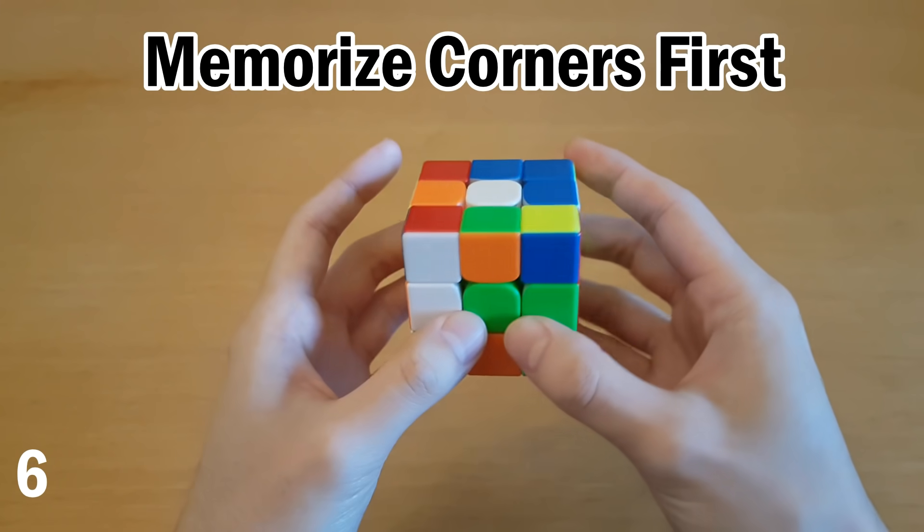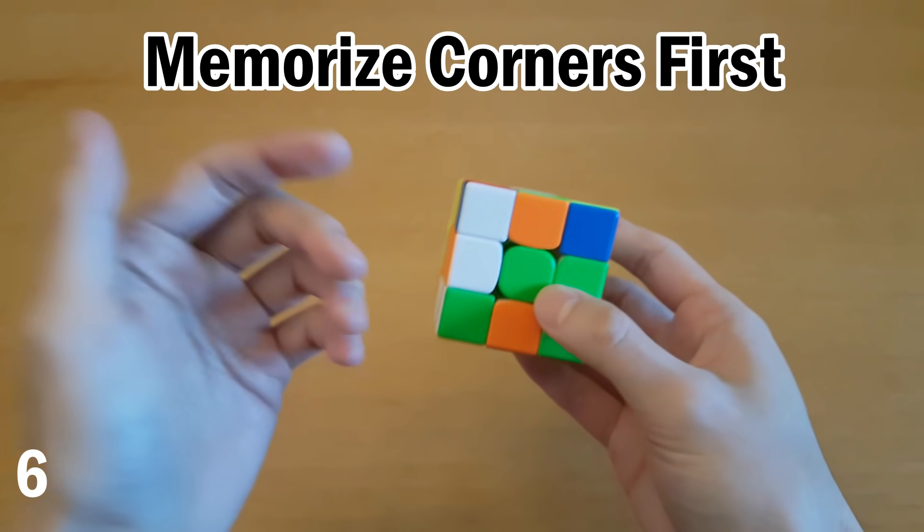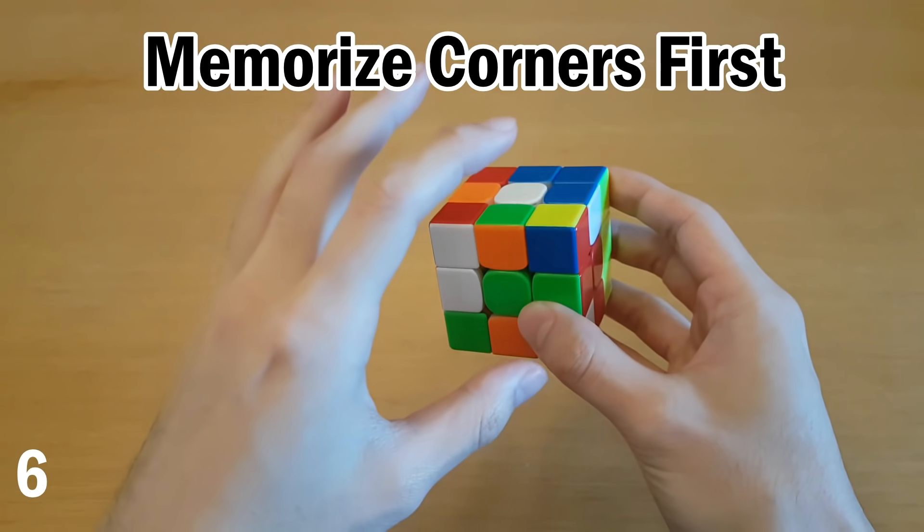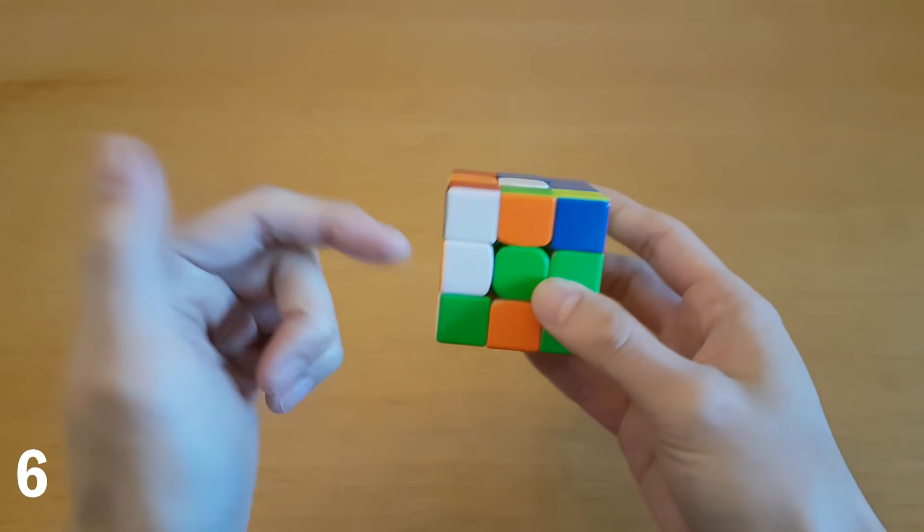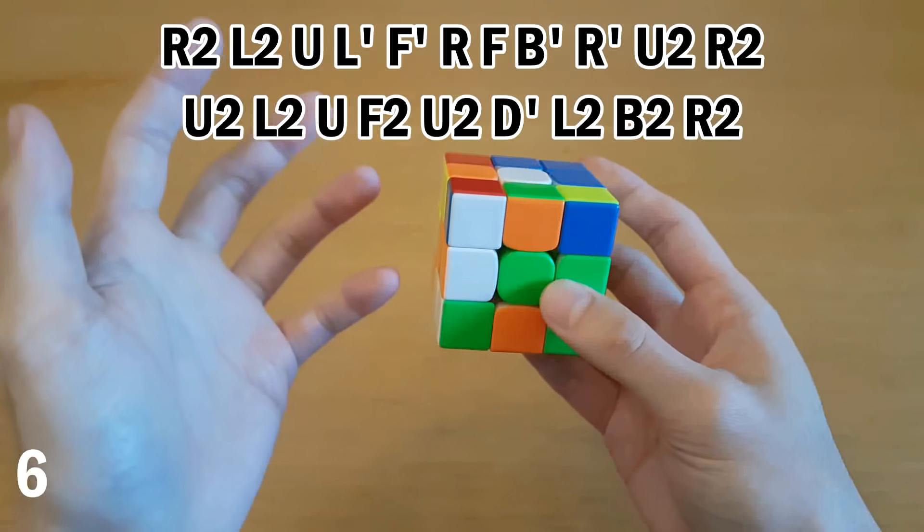Number six, parity. So make sure you're memorizing the corners first, so you know if you have parity by the time you start memorizing edges. Then when you start memorizing edges, if you have parity like you would in this scramble, then you should memorize differently.